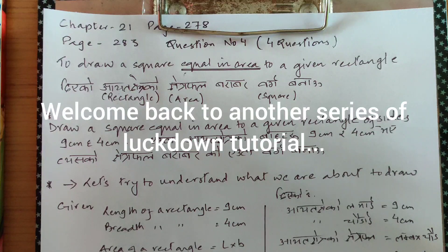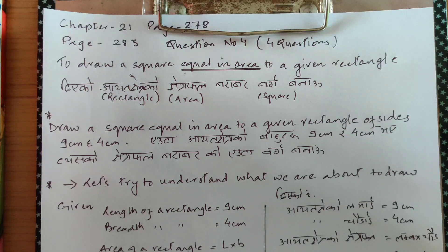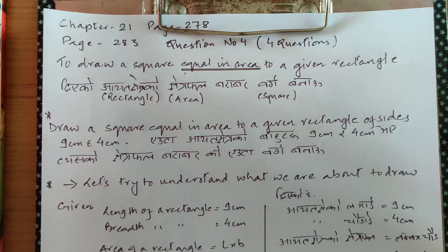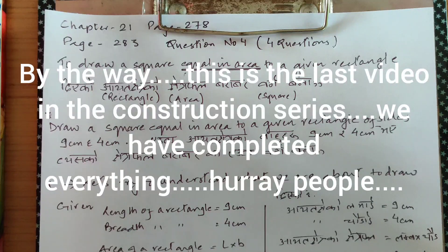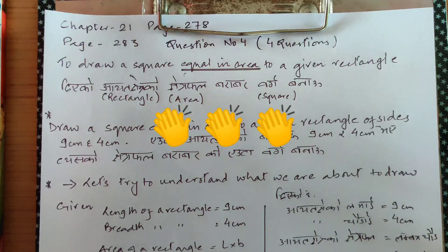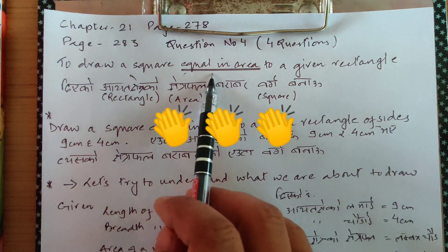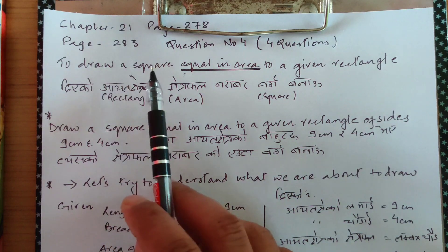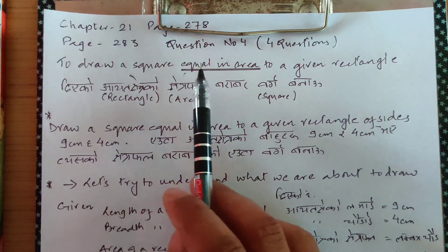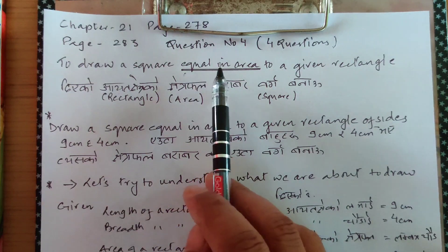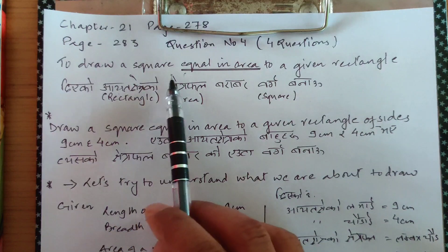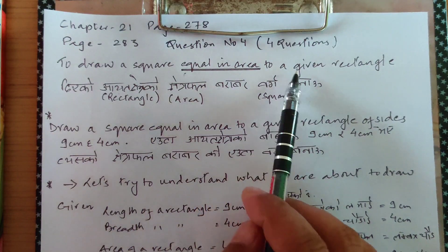Good morning, people. Welcome to another lockdown tutorial. We are still in chapter 21, page 278 to page 283, question number four. There are four questions and this is a totally different construction which you all need to learn: to draw a square equal in area to a given rectangle. The condition is that the area is equal between a square and a rectangle.